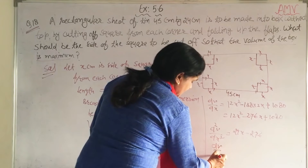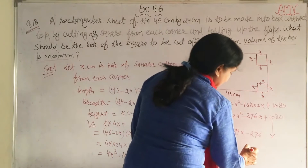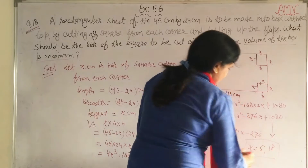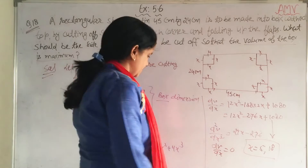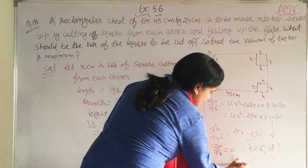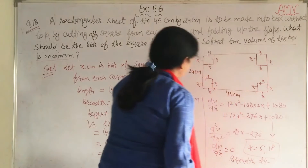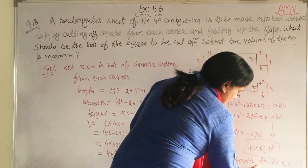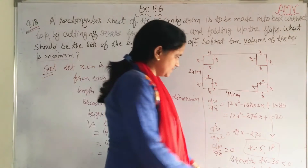Set dV/dx equal to 0. From this equation, solve by middle term split and you get two values of x: 5 and 18. But if x = 18, substituting into the breadth gives 24 − 36, which is less than 0 — not valid. So the only valid value is x = 5.